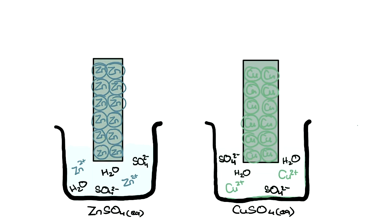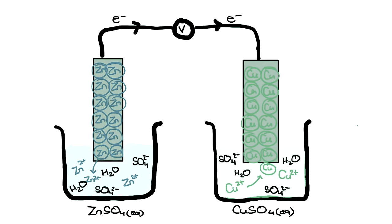So by placing a conducting wire between these two setups, we could allow this to occur. Zinc metal would lose electrons going into its own solution, and those two electrons would travel through the wires to the copper metal and into the copper salt solution, in which copper ions would gain the two electrons to become copper metal. So now we have the flow of electrons.